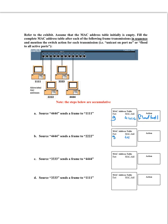In step 2 (accumulative), 4:4:4:4 wants to send to 2:2:2:2. There is no entry for 2:2:2:2, so the action is flood again. 4:4:4:4 is already in the table on port 9, so nothing new is learned. In step 3, 3:3:3:3 wants to send to 4:4:4:4 — that entry exists, so the switch unicasts to port 9.